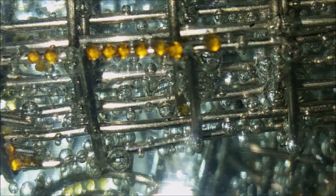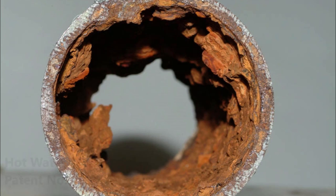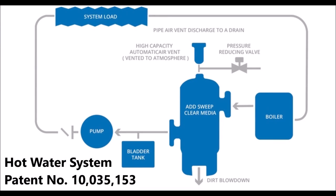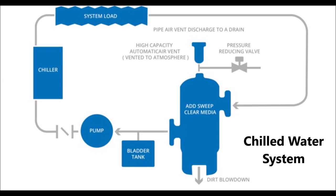Air in a hydronic system is a big problem causing corrosion, poor heat transfer, energy loss, and potential fouling. It is the air you cannot see that causes your pipes to be slowly eaten away by corrosion. By adding SweepClear media to a standard tangential air separator, the separator becomes a high performance coalescing air and dirt separator.